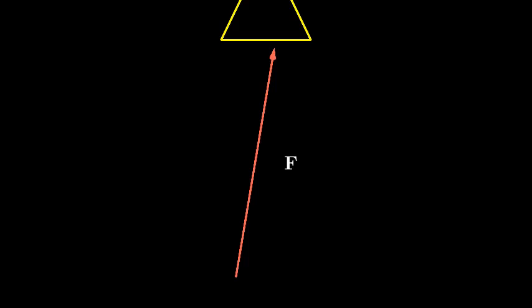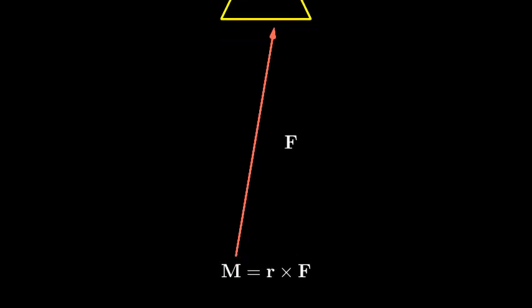To find the moment about each line, we need to use the cross product formula. The moment M equals r cross F, where r is the position vector from any point on the line to the force vector.